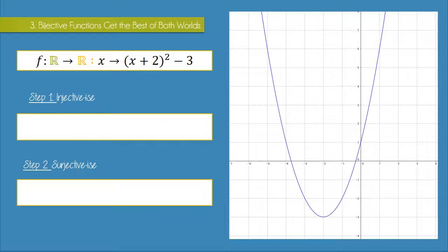Okay, so first, let's think about how we could make this function injective. Well, for this function to be injective, it means we can only have one input associated with every output. And currently, this is not the case because we have a quadratic function and there are two inputs associated with every output except for at the turning point.